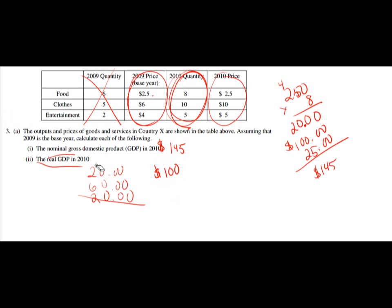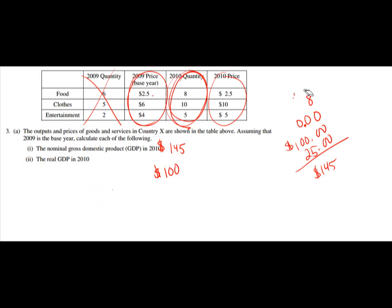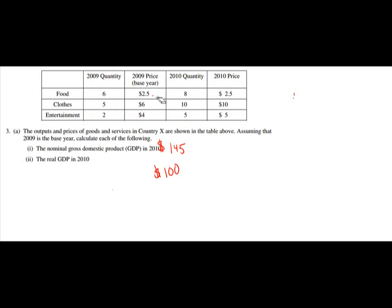This is worth two points on the question and it's not that difficult, but if you forget how to do it, it could cost you a lot of points. Keep in mind: nominal GDP uses current prices, and real GDP uses the base year prices. The question even reminded you of that.